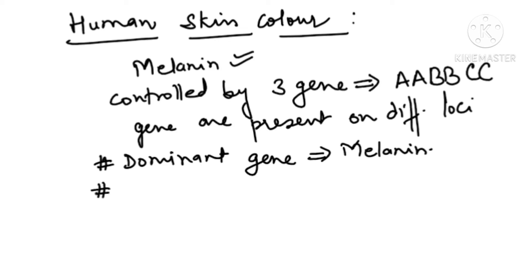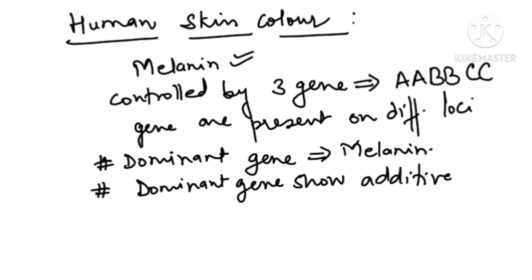So we say the dominant gene shows an additive effect, also called cumulative effect. More and more dominant alleles means more and more melanin pigment. This study was done by Davenport. Human skin color is controlled by three pairs of genes, each gene having two alleles.